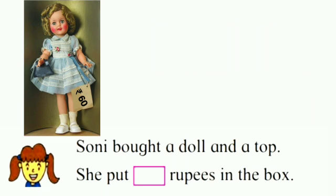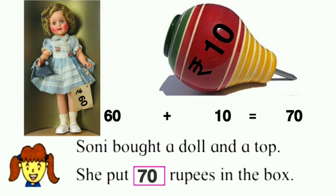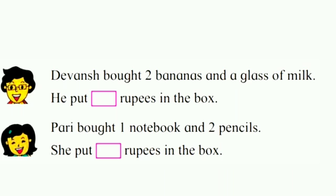Sony bought a doll and a top. The price of the doll is 60 rupees and the price of the top is 10 rupees. So 60 plus 10 is equal to 70. Sony will put 70 rupees in the box.